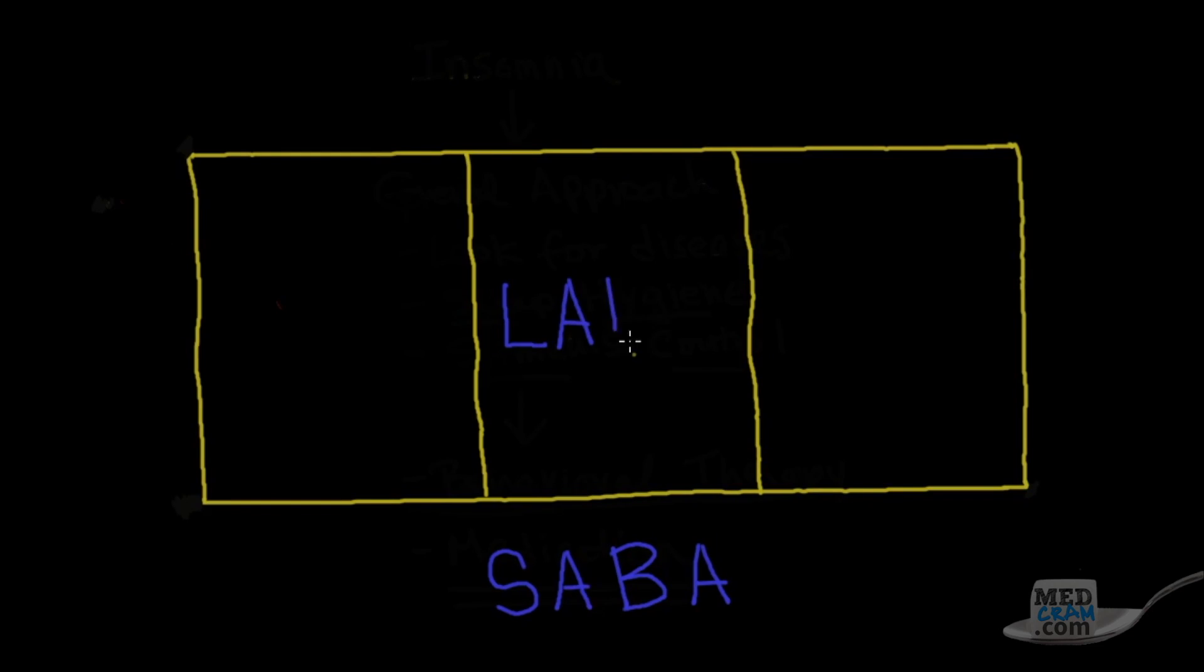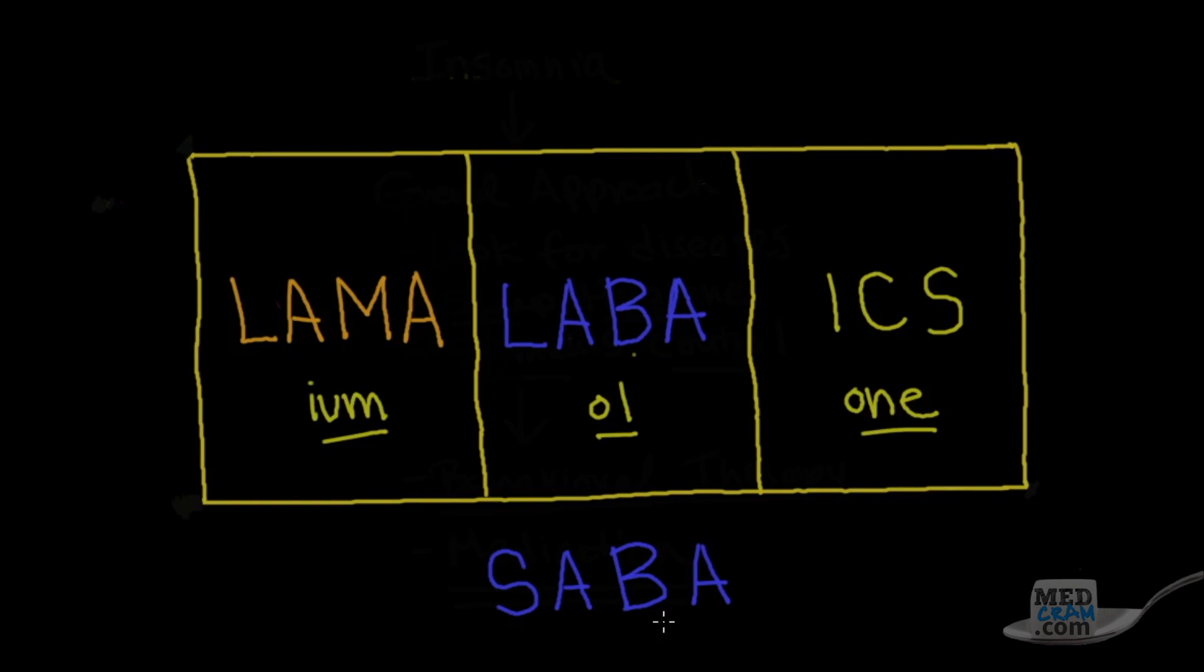Then we're going to look at the long-acting muscarinic antagonists, LAMA. And then finally we're going to look at the inhaled corticosteroids. So for those who don't remember, remember this: these are the ones that end in O-N-E, these are the ones that end in O-L, and these are the ones that end in I-U-M. Remember glycopyrrolate is also in that category. So it's I-U-M, O-L, and O-N-E. So why do I put this into this three-chambered box here with the SABA? This is how we're going to look at the treatment of COPD and asthma.